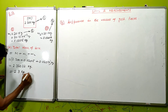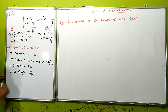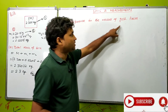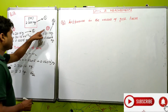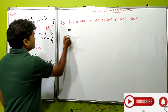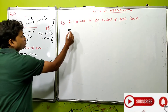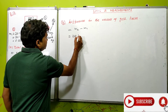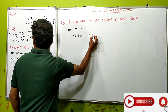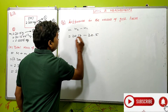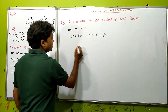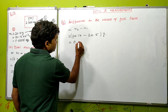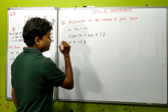Therefore the final answer for Part A is 2.3 kg. For Part B, we calculate the difference in the masses of the two gold pieces: 20.17 g minus 20.15 g. When we subtract, the result is 0.02 g.